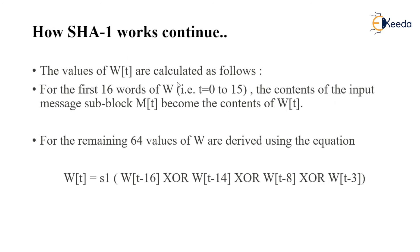The values of WT are calculated as follows. For the first 16 words of W, that is W0 to W15, the contents of the input message sub-block MT becomes the contents of the WT.